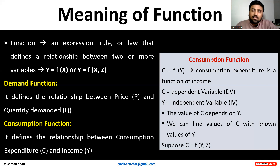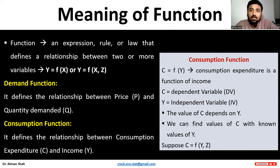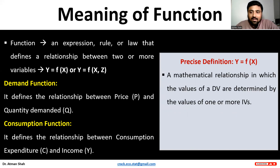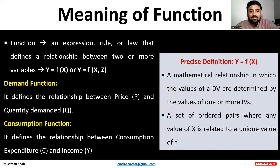Suppose consumption expenditure also depends on some other factor Z — for example, region, caste, or gender. In that case, consumption expenditure is the dependent variable, and income and Z are the independent variables. The precise definition of y = f(x) is: a mathematical relationship in which the values of a dependent variable are determined by the values of one or more independent variables. It is a set of ordered pairs where any value of x is related to a unique value of y.